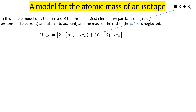Now we have seen how to get the approximated average atomic mass of elements from measured atomic masses of isotopes. I think it is time to make a simple model for the atomic mass of isotopes. This course is about modeling, and I want to explain what the purpose of modeling is.